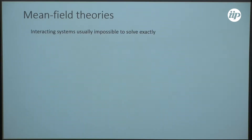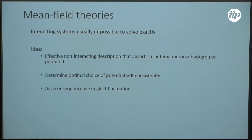Mean-field theories. Why do we need mean-field theories? Interacting problems are usually impossible to solve exactly. So the idea of mean-field theories is we introduce an effective potential with which we describe the mean effect of all interactions. This potential is then to be determined self-consistently. So we minimize the free energy of our many-body Hamiltonian with respect to this new single-particle Hamiltonian. And as a consequence of only having this mean-field, we neglect fluctuations.